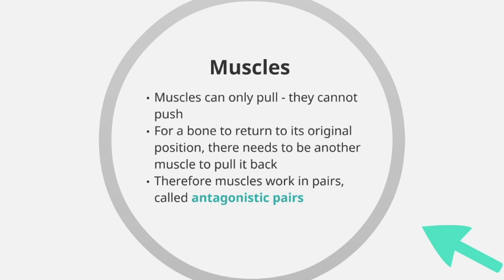The first thing we need to know about muscles is that muscles can only pull — they cannot push. We tend to think about actions in sport, perhaps with a scrum where we're trying to push opponents back; this is a result of muscles pulling in different directions producing a pushing effect. Muscles by themselves can only pull on the bone, which then produces the movement.